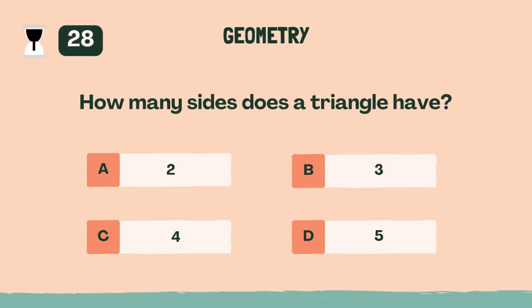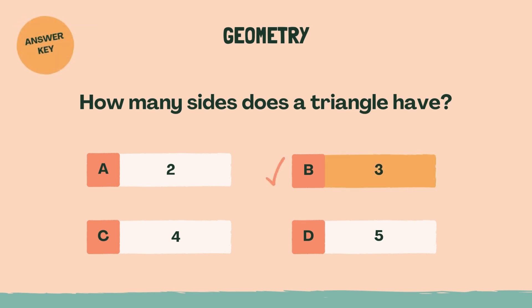How many sides does a triangle have? The answer is B, 3.